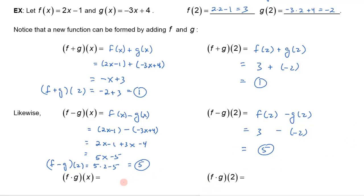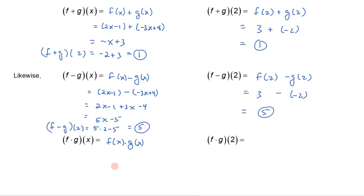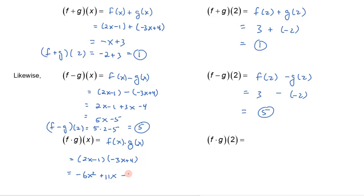I can do that with multiplying and dividing as well. (f times g)(x) is just f(x) times g(x). So that gives me (2x minus 1) times (negative 3x plus 4). Here I'll use the FOIL property to multiply these two binomials. That gives me negative 6x squared for the first terms, then 2x times 4 is 8x for the outer, and negative 1 times negative 3 is 3x for the inner, giving plus 11x combined. And negative 1 times 4 is negative 4.